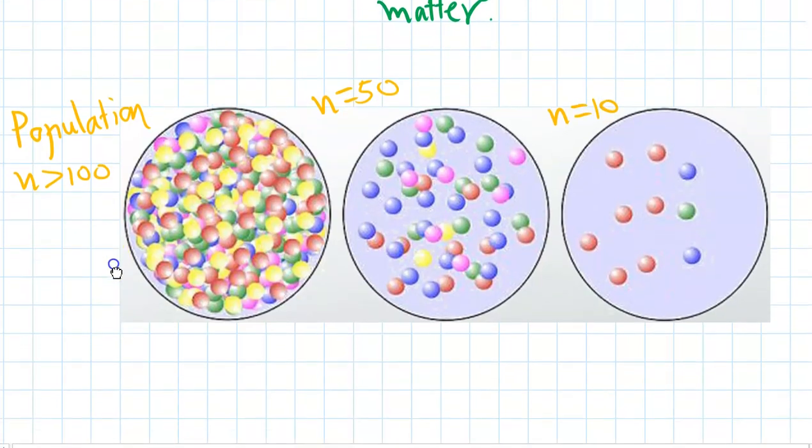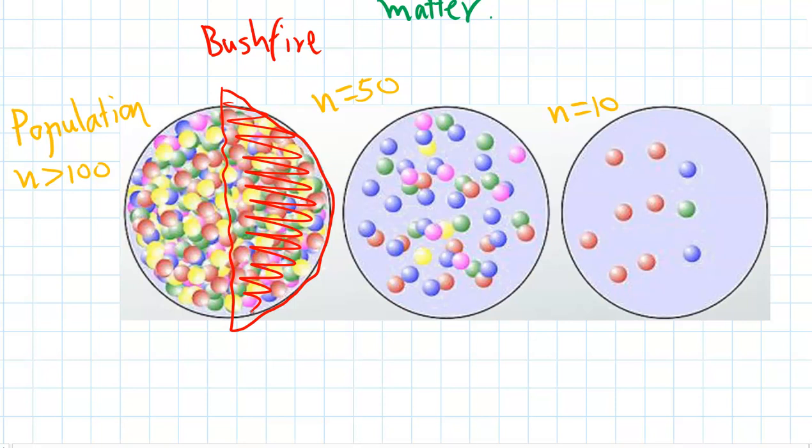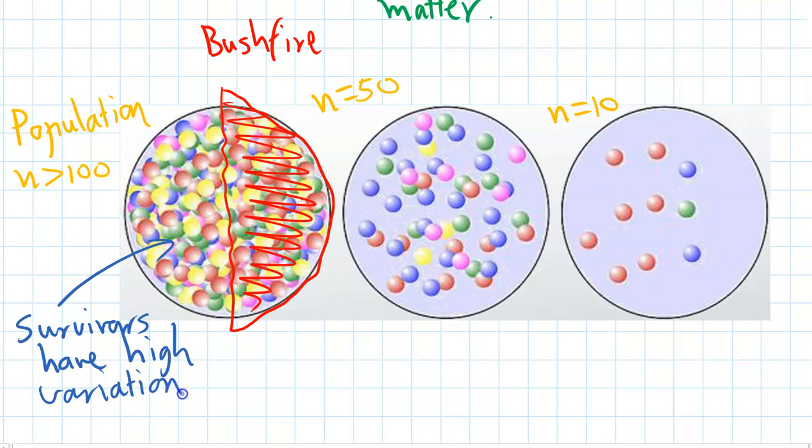Let's have a look at the effects of genetic drift on these three populations. The example we'll use here is a bushfire. We're imagining that the circle here is representing the whole habitat range of this species. Let's say a bushfire comes through the area and destroys and kills every individual living in this part of the habitat. For a huge population with more than 100 individuals, there's still a wide range of traits and a huge variation in the survivors. The survivors still have high variation.